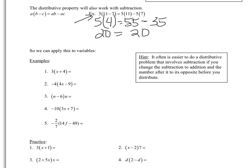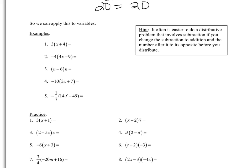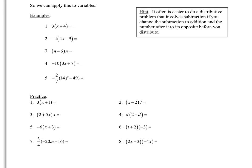Where distributive property really comes into play is when there are variables involved. You might ask why bother doing this when order of operations is fast and easy — well, we're not always going to know all the numbers, so we want to apply this to variables. If we look at the example 3 times x plus 4, we're supposed to do x plus 4 first according to order of operations, but we don't know what x is, so we can't add those first. But we can simplify this by using distributive property.